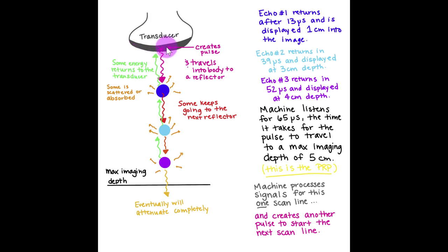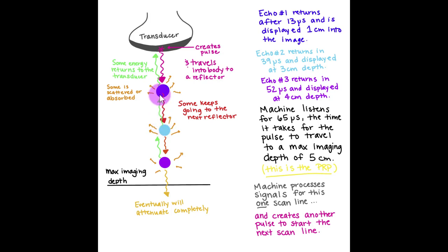For each pulse that is sent out, the transducer will create the pulse and it will propagate into the body until it interacts with a reflector. Once it hits a reflector, some of that energy returns to the transducer and is processed for the image, some of the energy is scattered or absorbed, and some of it continues going through the body until it hits another reflector. The same thing happens — some returns to the transducer, some is scattered or absorbed, and some keeps going. This happens all the way through the body, through all the reflectors.